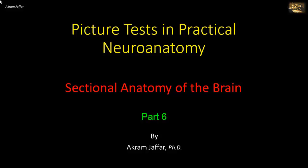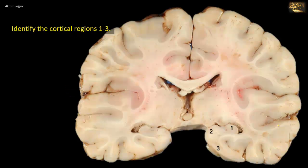Now I will deal with the sectional anatomy of the brain. Identify the cortical regions 1 to 3.